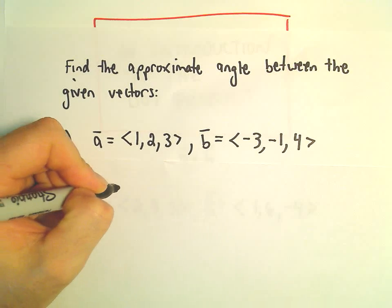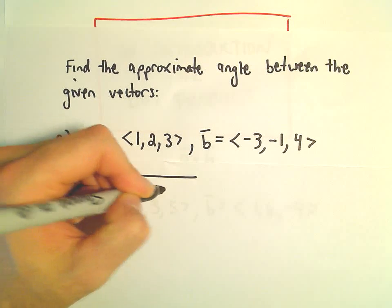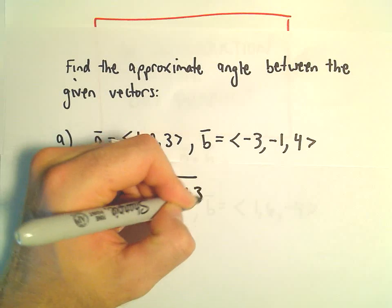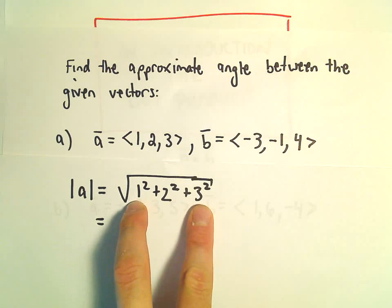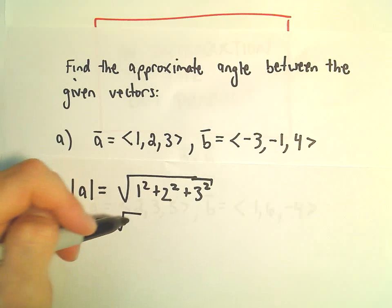The magnitude of a, so that's going to be 1 squared plus 2 squared plus 3 squared. That's 9 and 1 is 10 plus 4. We'll get the square root of 14.